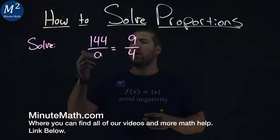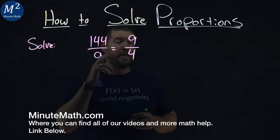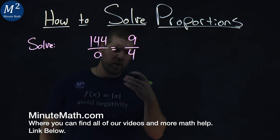We're given this problem right here. Solve 144 over A equals 9 over 4, and we have to solve the proportion.